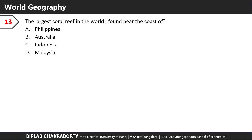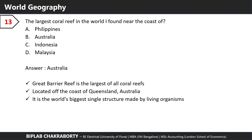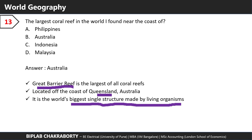The largest coral reef in the world is found near the coast of which country? The answer is Australia. The Great Barrier Reef is the name of the largest coral reef in the world, located on the coast of Queensland in Australia. It's also the world's biggest single structure made by living organisms.